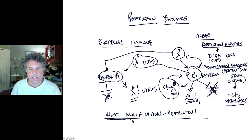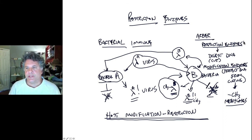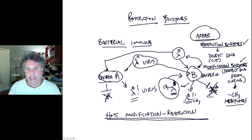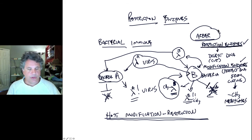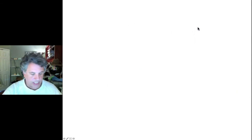This host modification system involves two sets of enzymes: restriction enzymes and modification enzymes. Arber's discovery of these enzymes led to what we would term modern biotechnology by allowing us to make recombinant DNA — to recombine DNA from different sources using these restriction enzymes in creative ways. That's the discovery of restriction enzymes; now let's look at how they work.